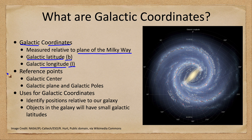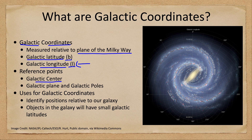Like any other coordinate system, we need reference points here, and the reference point would be the galactic center. Longitude always needs a specific reference point to be measured from, and for that we choose the position from our sun looking toward the center of the galaxy. That gives us the reference point, and that's given a galactic longitude of zero. Then we measure along that to determine the coordinates.